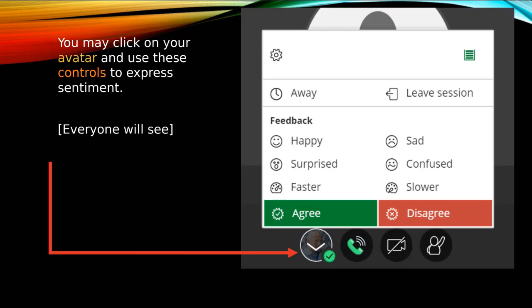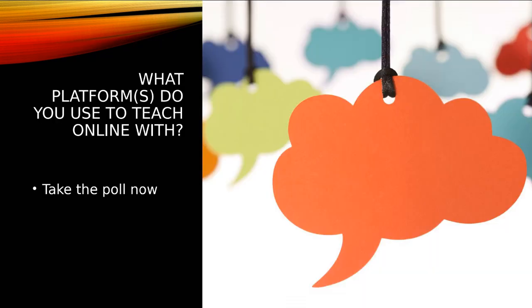During the session, feel free to give us happy smiley faces or confused faces if there's something you're not quite sure about. In Collaborate you can find happy, surprised, please go faster or slower — that's great when you're dealing with international students or students having connectivity issues. So the next task: a poll is going to appear on screen — please let us know what platforms you use to teach online with.